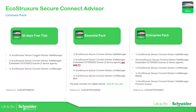The EcoStruxure Secure Connect Advisor consists of three parts: the gate manager that is in the cloud, the site manager which will be in the HMI, and the link manager that will be for your laptop. For the site manager we have something called five device agents. For the 30 days free trial, we have one license for the site manager embedded extended, which is for five device agents.